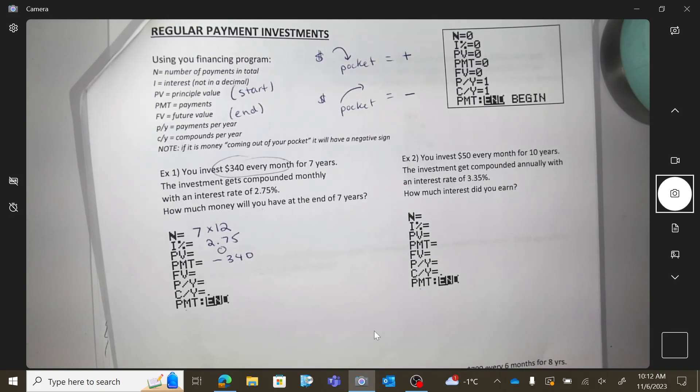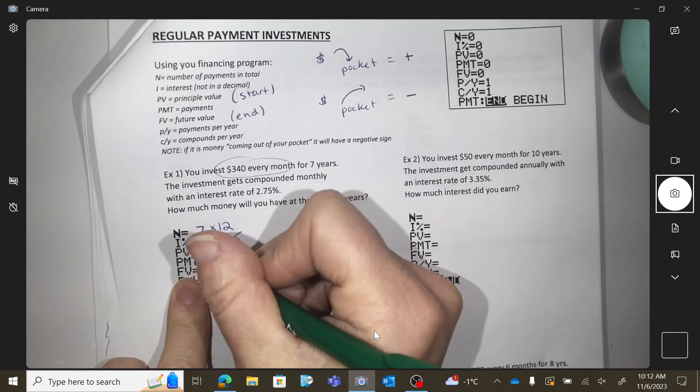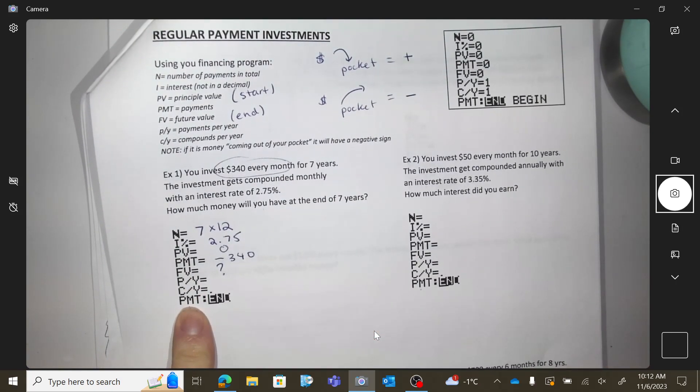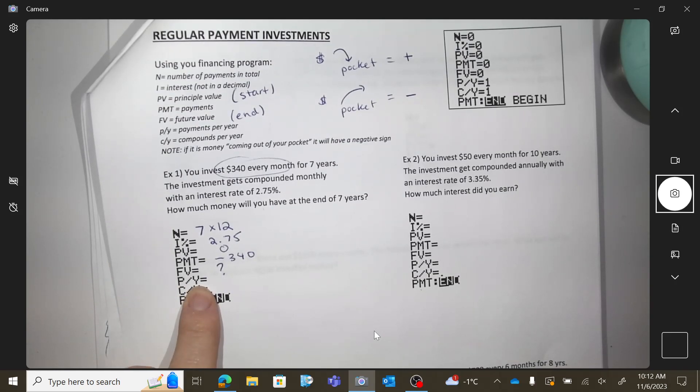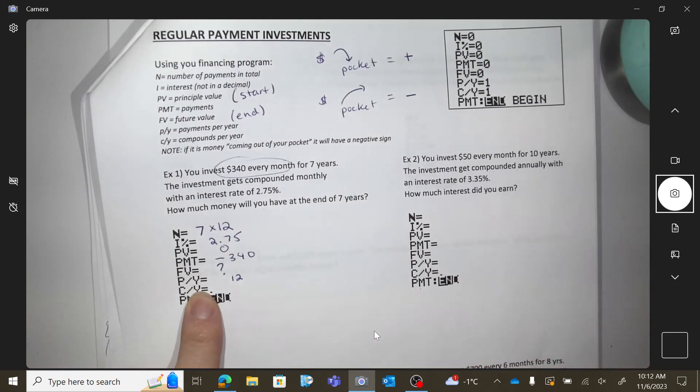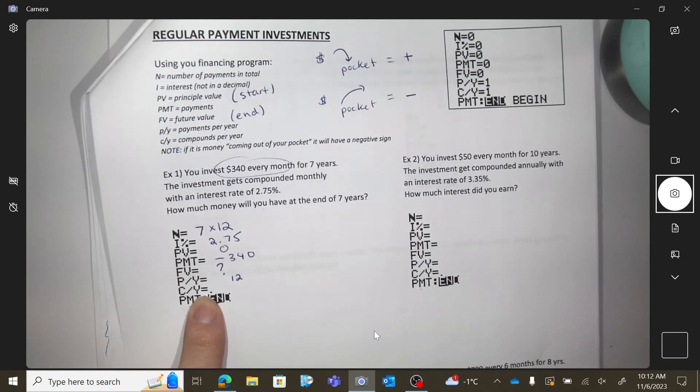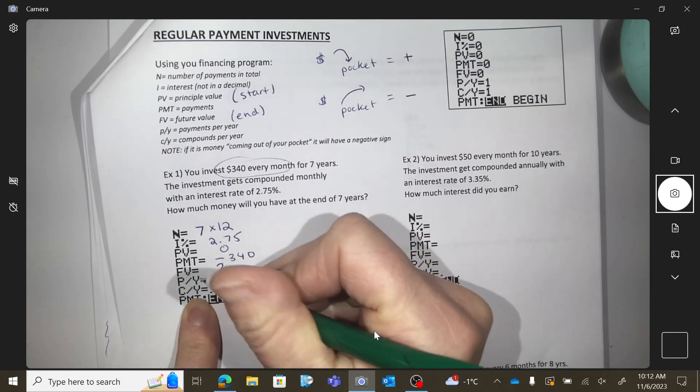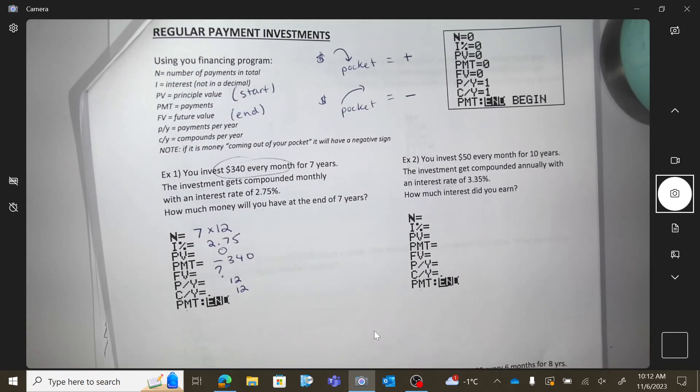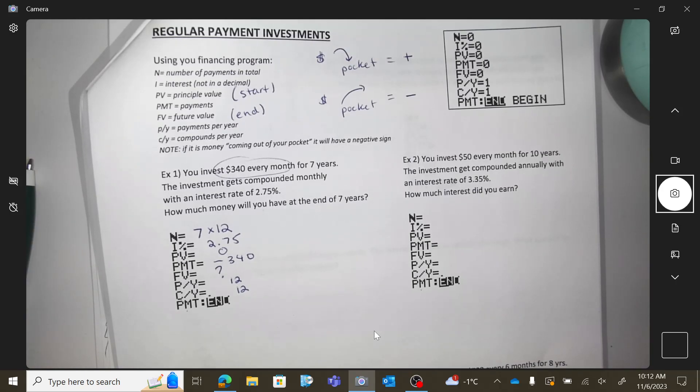Okay, so every month you go to the bank and you give them $340. Can you put this in my account? Future value, we're trying to see, that's what we're trying to figure out, right? How many payments did you make per year? 12. Every month you were doing it, so that's 12. And how many compounds per year? It gets compounded monthly, so also 12. Okay, here we go. You ready?